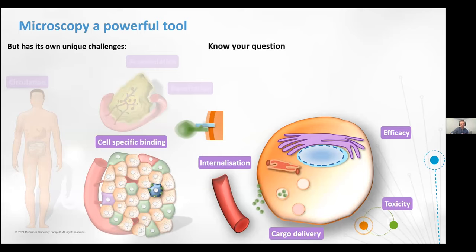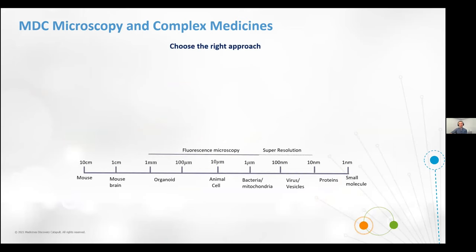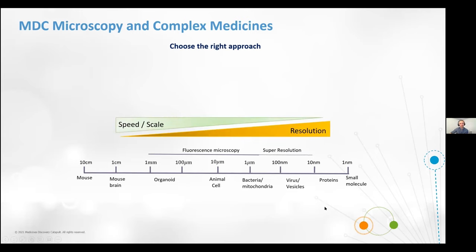When designing such a project, you want to know what questions you want to answer, plan your analysis around that, and then choose whatever tool you want. At MDC we have a number of microscopes that we use to answer questions in complex medicine. The approach basically depends on what scale you're looking at. If you're looking at tissue or organoids, you're in the range of one millimeter to 100 micrometers. As you go down in scale, you get higher resolution. In general, there's a trade-off between speed, scale, and resolution.